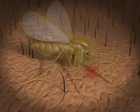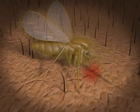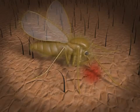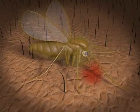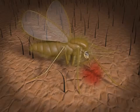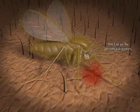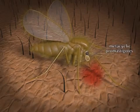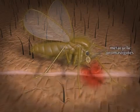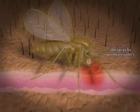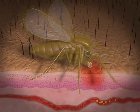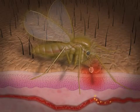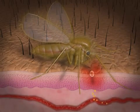Following the ingestion of blood, the metacyclic promastigotes are released and enter the host through the bite site by regurgitation. Observe that the parasite reaches the mammalian skin and subsequently invades different cell types that it encounters.